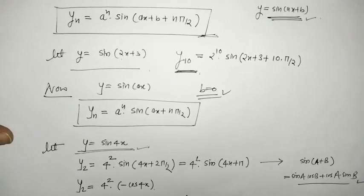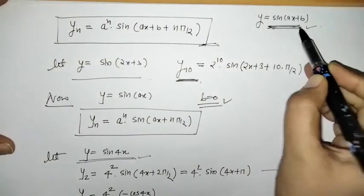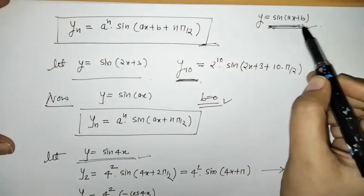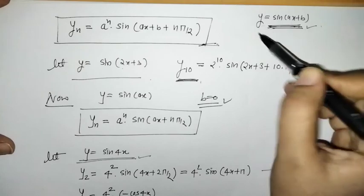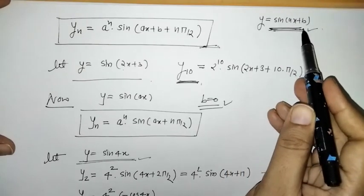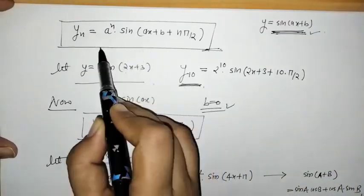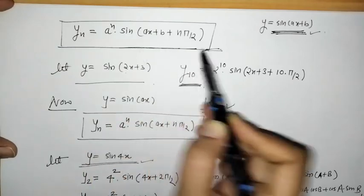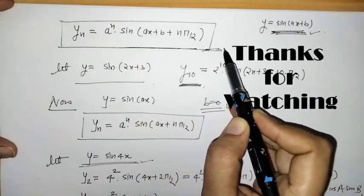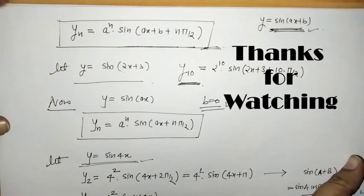In this way we have found the nth derivative of y = sin(ax + b), where a and b are constants, and its nth derivative is given by the formula yn = aⁿ·sin(ax + b + nπ/2). That's it for now — see you in the next video, thank you, keep watching.